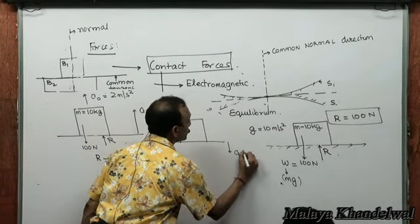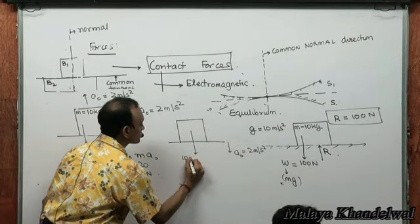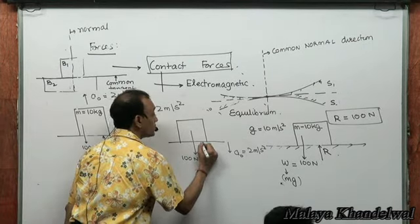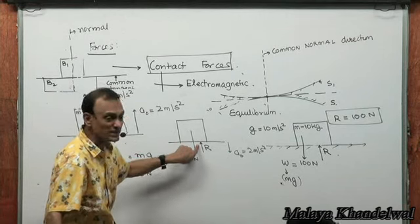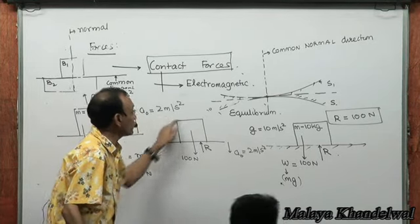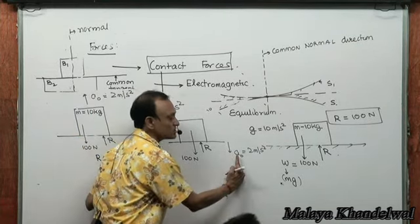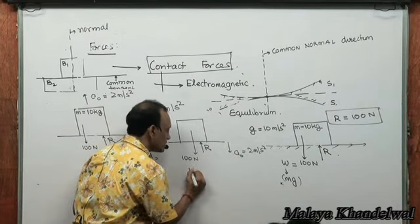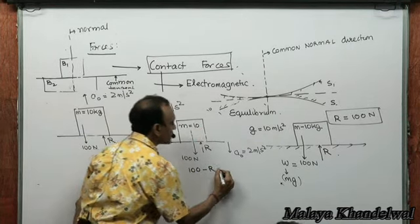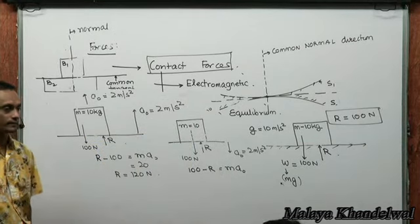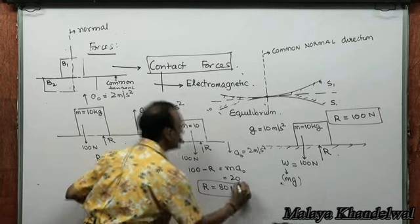If instead the elevator moves downward with an acceleration A₀ = 2 m/s², there is MG = 100 N downward and normal reaction R upward. The normal reaction always pushes — it will never pull. The net downward force causes the downward acceleration: 100 − R = M × A₀ = 10 × 2 = 20, so R = 80 newtons.